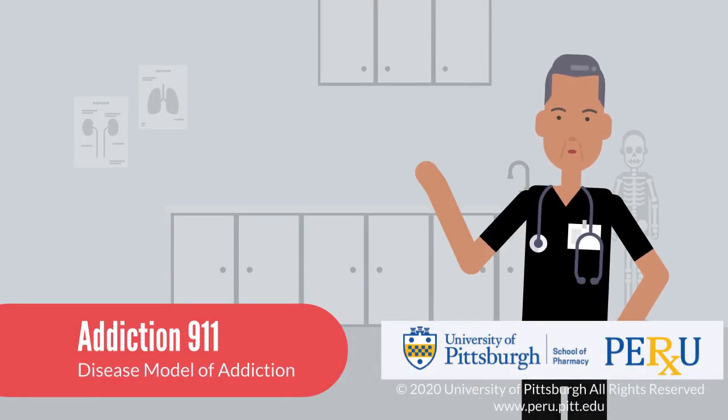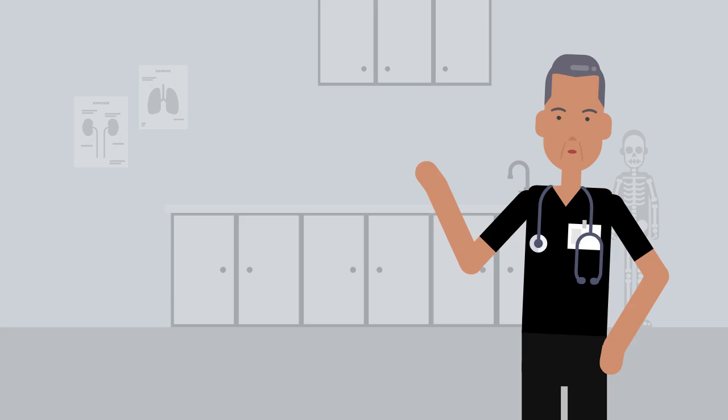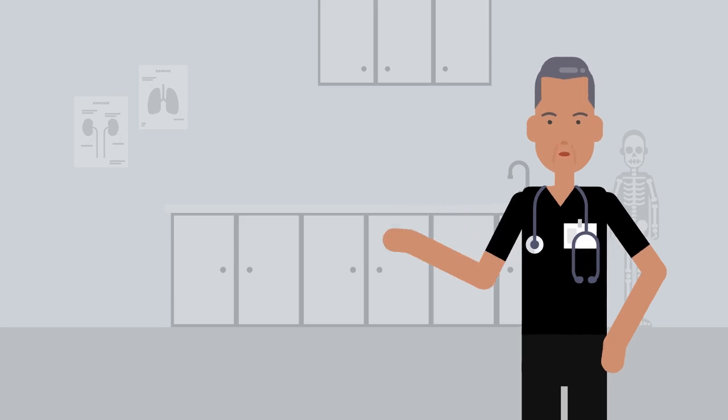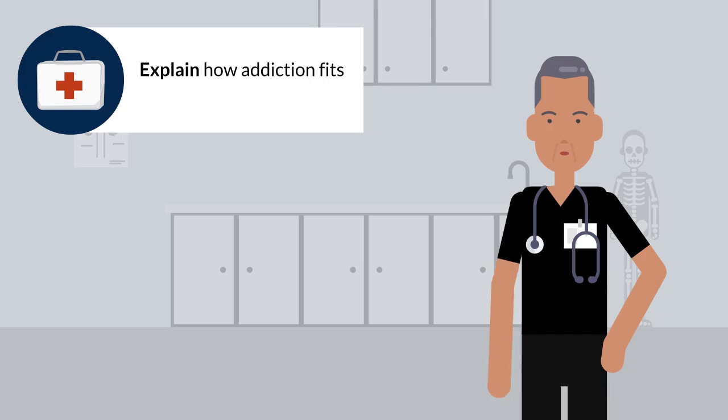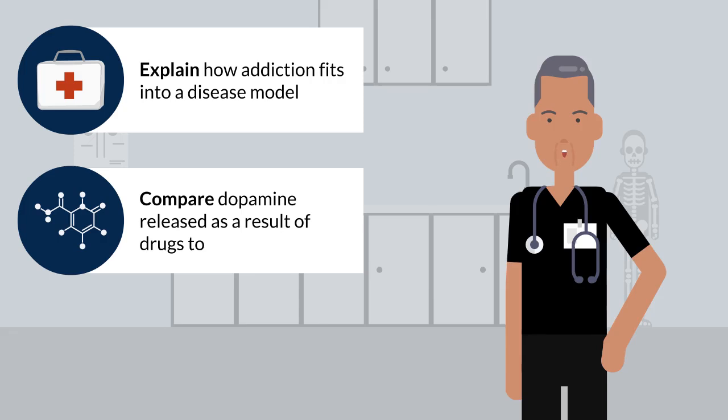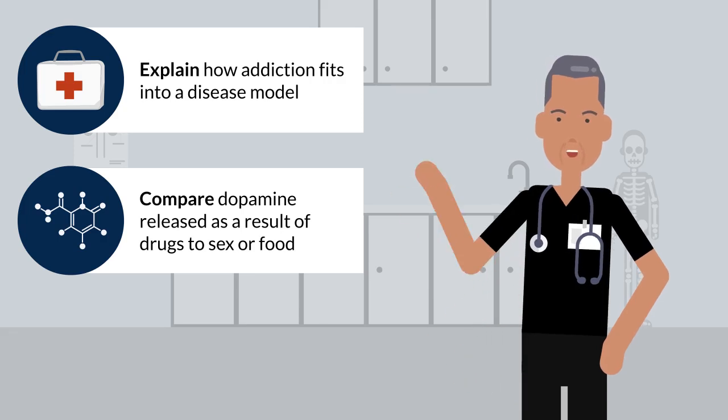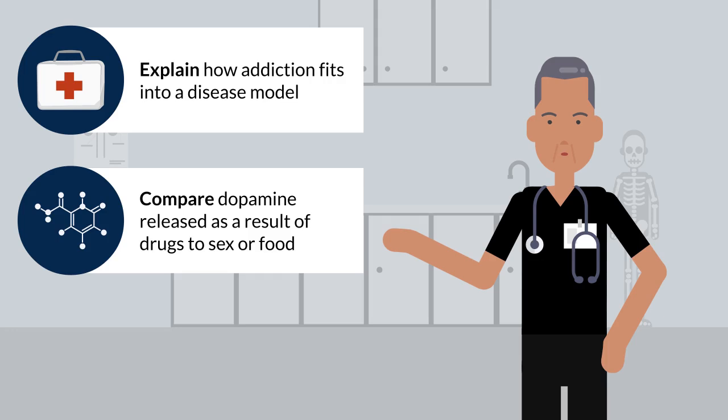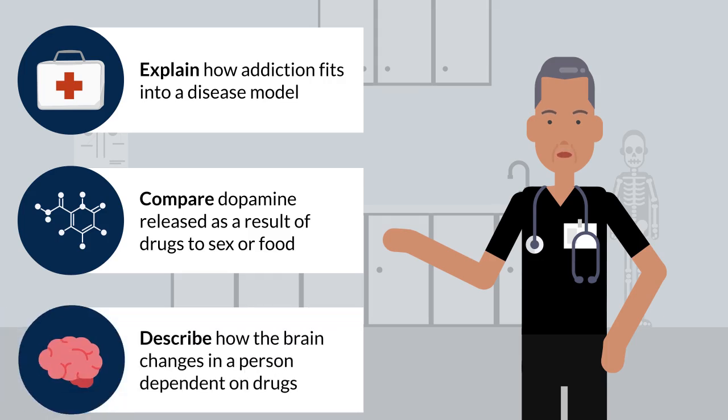Addiction 911 disease model of addiction. After watching this video, you will be able to explain how addiction fits into a disease model, compare dopamine released as a result of drugs to sex or food, and describe how the brain changes in a person dependent on drugs.